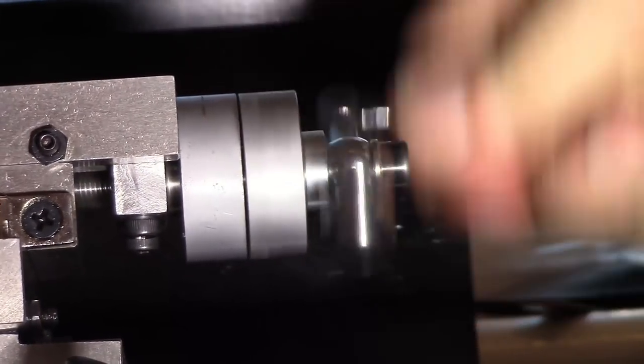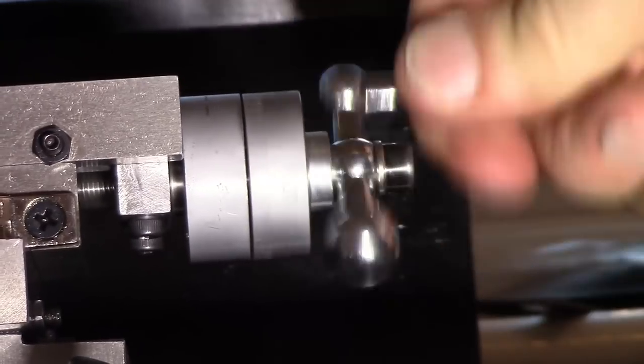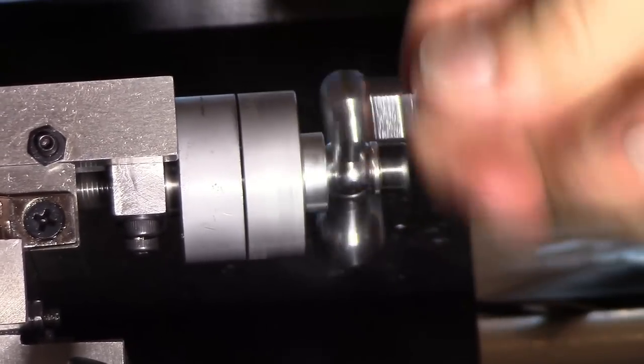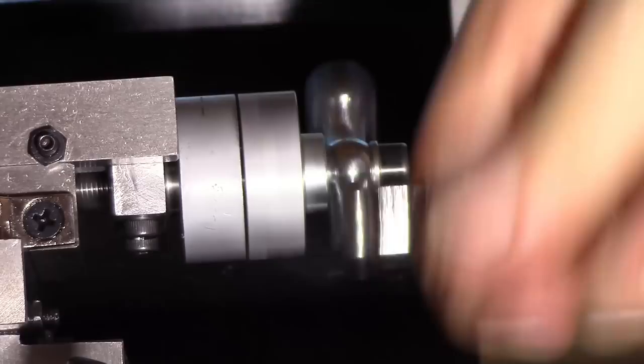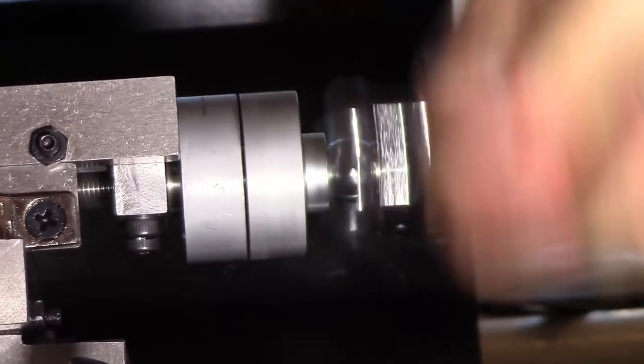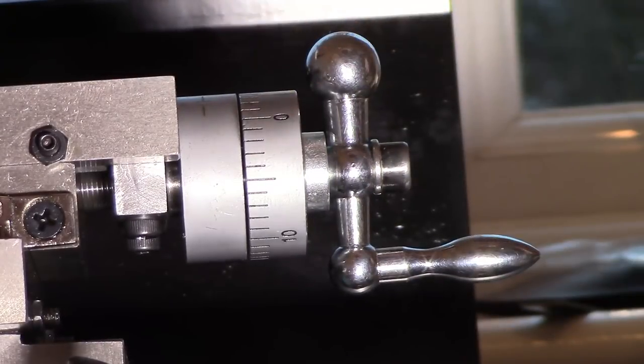I could reduce that by putting a shim washer in but I'm not much bothered about it. The important thing is that I've solved that problem with the indexing disk.